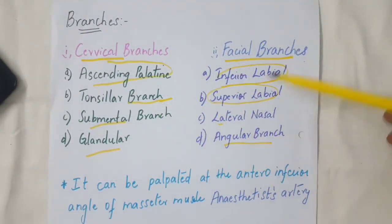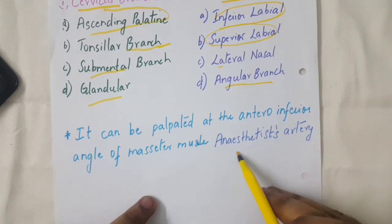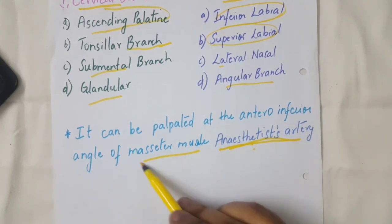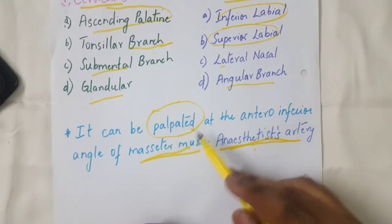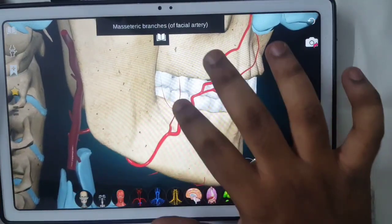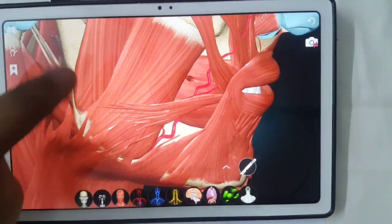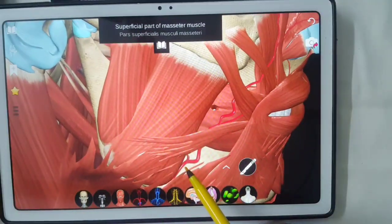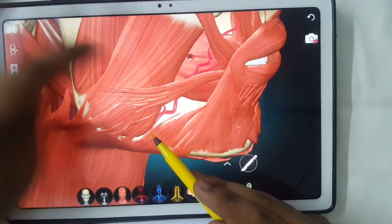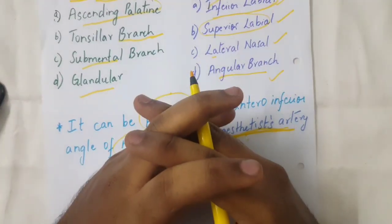The last point is that this artery is also called the anesthesia artery, because it can be palpated at the anterior inferior angle of the masseter muscle. Palpation means examining the artery by touching it. In the 3D anatomy, this is the masseter muscle, and the facial artery can be palpated here at the anterior inferior angle of the masseter muscle. That's all for today — see you in the next video.